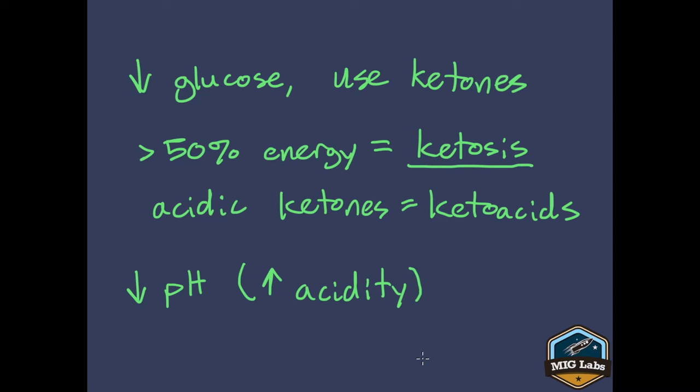Now, if we have a relatively small amount of ketoacids being used, the body is able to handle that. It can buffer that acidity and bring the pH back to a normal level. The problem is where you get into ketosis, where over half of the body's cellular energy is coming from ketone bodies. Now we have a lot of ketoacids, and the body loses its ability to buffer that pH. So as these ketoacids build up, we're going to see a decrease in the pH or an increase in the acidity. The body has a very low tolerance for changes in pH. When we have a pH that is too low or an acidity that is too high because of a buildup of ketoacids, we call that ketoacidosis.